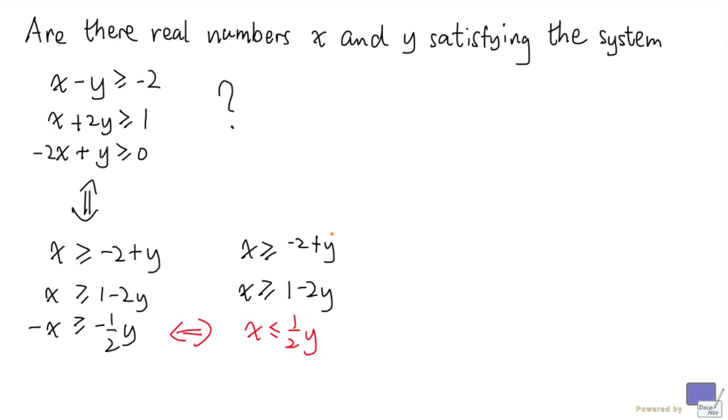That means one half y must be at least minus 2 plus y, and it also has to be at least 1 minus 2y. Alright, so I can write one half y to be at least x, and x in turn is at least minus 2 plus y. And one half y is at least x and at least 1 minus 2y.